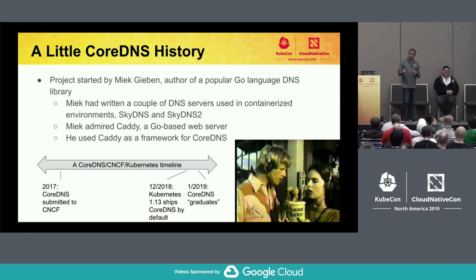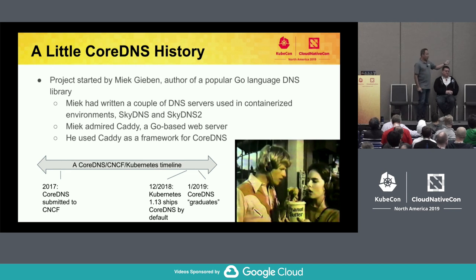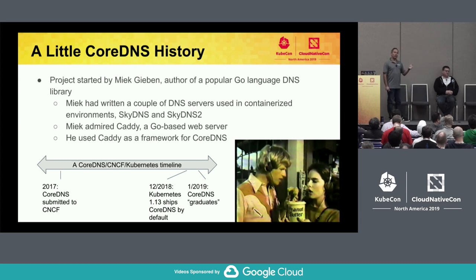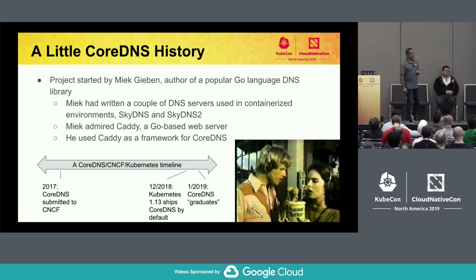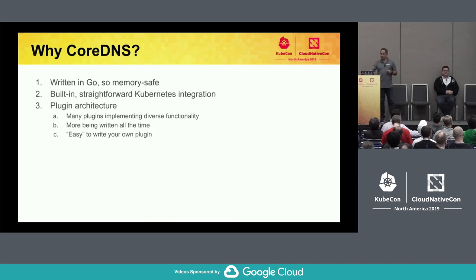CoreDNS has had a pretty rapid evolution. We brought it to the CNCF back in 2017, and by December of last year — only 11 months ago — it became the default DNS server shipped with Kubernetes. Then just a month later in January of this year, it reached graduated status within the CNCF. We're very pleased with its success.